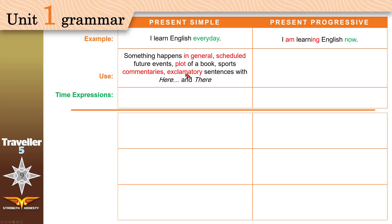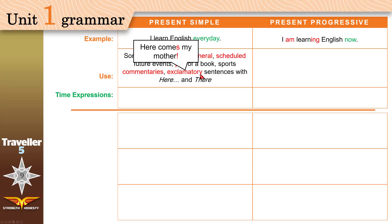Also use present simple with exclamatory sentences using 'here' and 'there,' like 'here comes my mother.' When you use 'here' or 'there' with an exclamation mark, the sentence is exclamatory — use present simple. For example: 'here comes the pain, Brock Lesnar' or 'here comes my mother.'